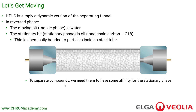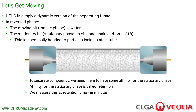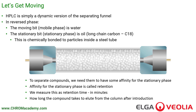To separate compounds, we need them to have some affinity for the stationary phase. They have to have carbons and hydrogens that will stick to the long chain hydrocarbon on the stationary phase. Affinity for the stationary phase is something called retention, and we measure retention as a retention time — in minutes — how long it takes for a molecule to make its way along the length of the column and out the other side.